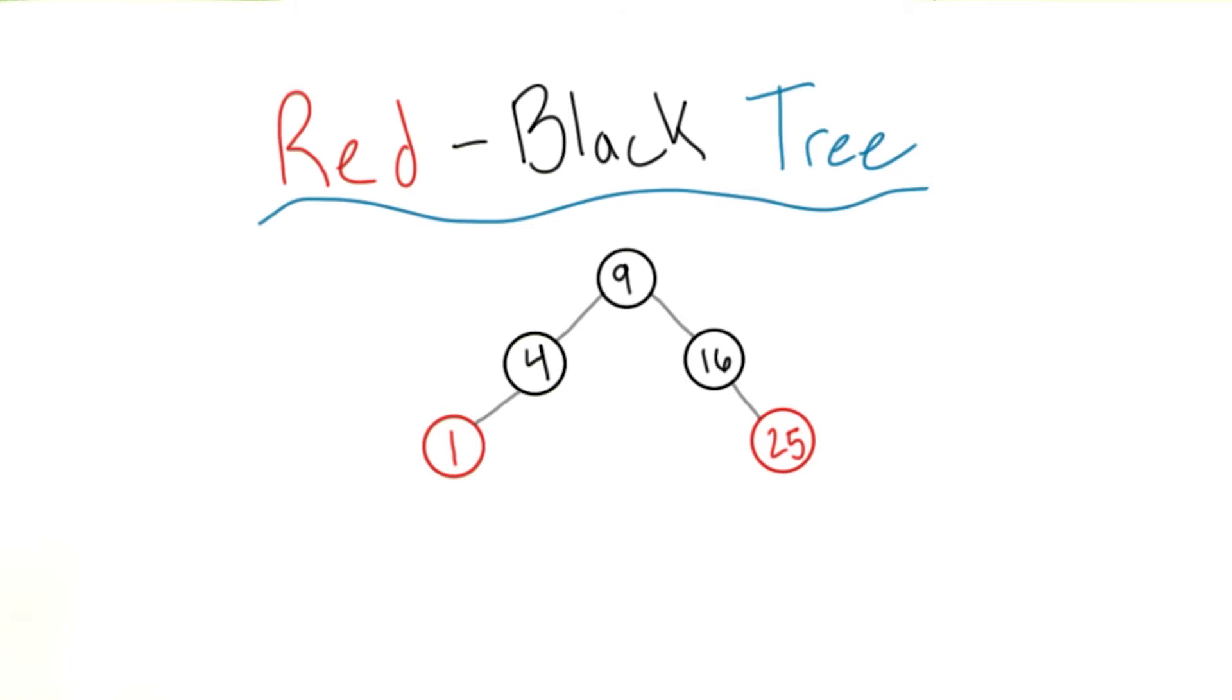The most common example is a red-black tree, which is an extension of a binary search tree. As is painfully common in computer science, the name turns out to be very straightforward.